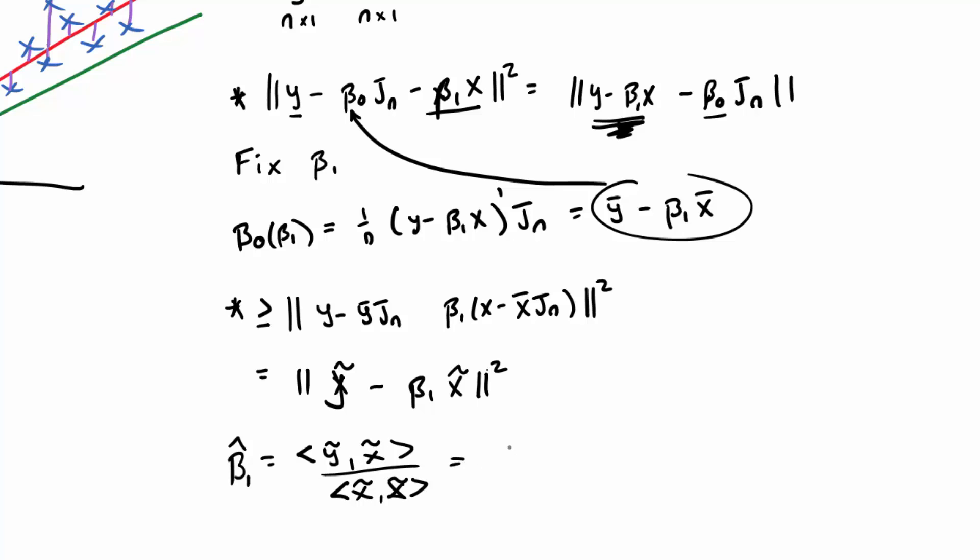And we know from the last lecture that that is the estimated covariance between x and y times the standard deviation of the y over the standard deviation of the x. So it turns out that if we do linear regression, our estimate is identical to as if we did regression through the origin, having centered the data first.